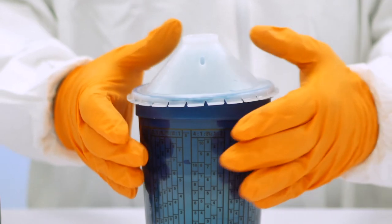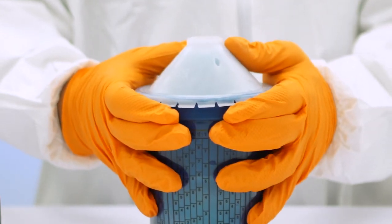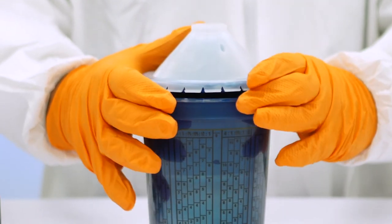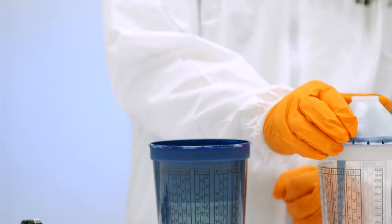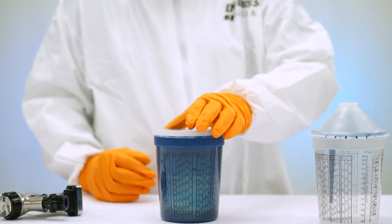As the lid starts to come up on one side, rotate the cup 180 degrees and do the same on the other side. Remove the lid and properly dispose of it. Snap the flat lid onto the paint cup for storage.